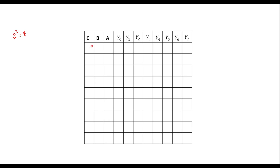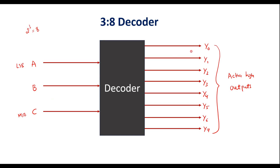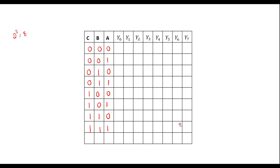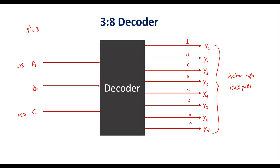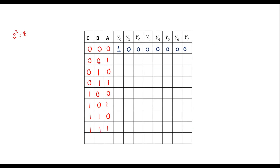Let me write all possible combinations: 0,0,0; 0,0,1; 0,1,0; 0,1,1; 1,0,0; 1,0,1; 1,1,0; and 1,1,1. In the 3-to-8 decoder, when A, B, C are 0,0,0, the output Y0 line will be high and the rest are 0. Similarly, when C,B,A is 0,0,1, Y1 line is high and the rest are 0.